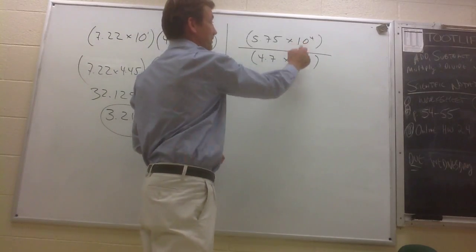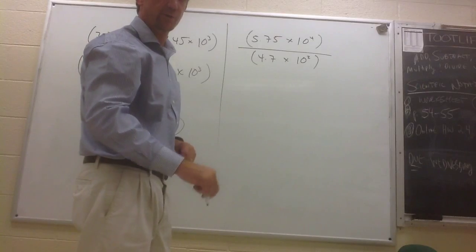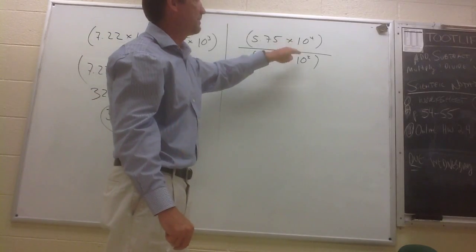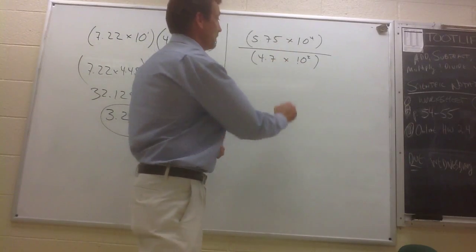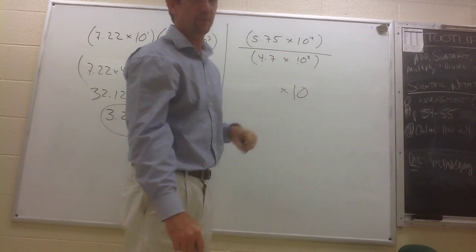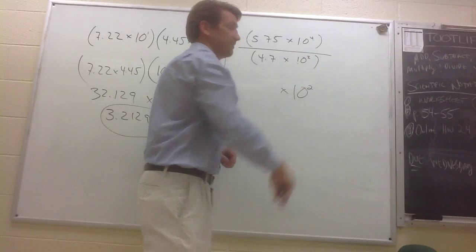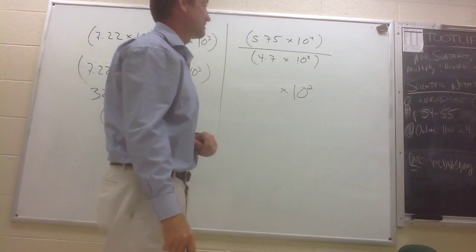Well, again, remember from last week when we were dividing powers with the same base, we learned a shortcut for that too. To divide powers with the same base, we will keep the base the same and we subtract the exponents. 4 minus 2 is 2. So 10 to the 4th divided by 10 squared will give us 10 squared.